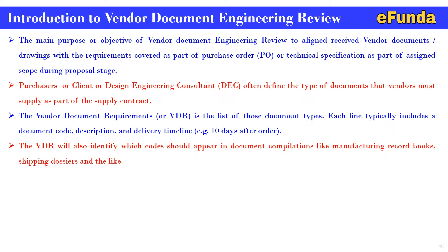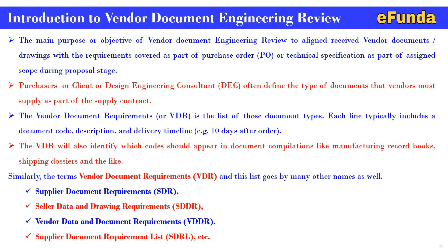The VDR also identifies which codes should appear in the document compilation, such as the manufacturing record book and shipping dossier. The term vendor document requirement (VDR) goes by many other names, including supplier document requirement (SDR), seller data and drawing requirement, vendor data and document requirement (VDDR), and supplier document requirement list (SDRL).